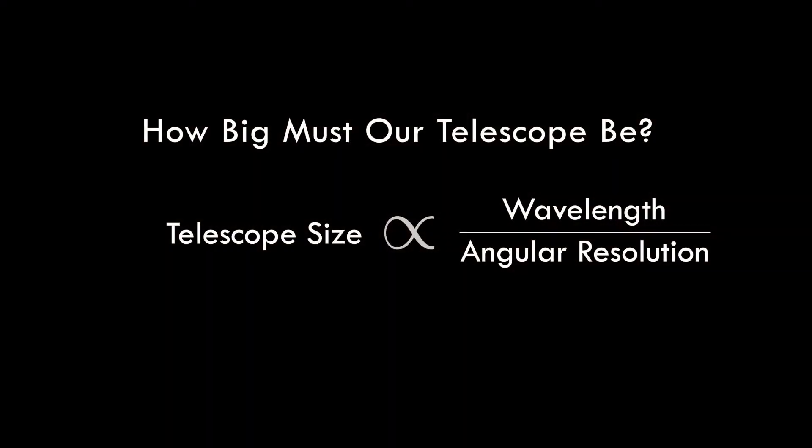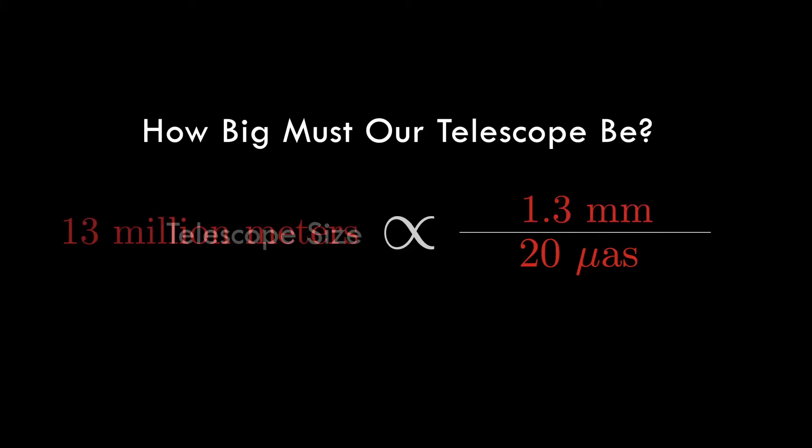And so taking a picture of something that small is really hard. The reason why can all be explained with a very simple equation. Diffraction says that there are fundamental limits to the smallest objects we can see. Just like our eyes can't see bacteria and different things like this, telescopes also have fundamental limits of what they can see. This governing equation says that in order to see smaller and smaller, we have to make our telescope bigger and bigger. So if we plug in the size of the black hole we want to see and the wavelength we have to see it at, we can easily calculate that we just need to build a telescope 13 million meters across, or essentially the size of the Earth.